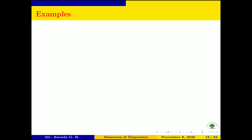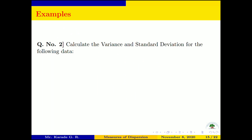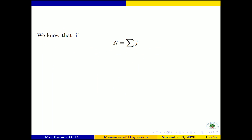Example 2: Calculate the variance and standard deviation for the following data. The values of X and corresponding frequencies are: (0, 2), (2, 3), (4, 5), (6, 6), (8, 4). We again use the formulas: N = summation F, X̄ = summation FX / N, and Variance(X) = summation FX² / N − X̄².